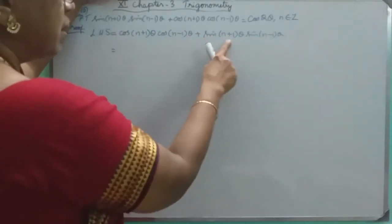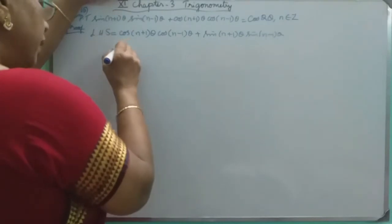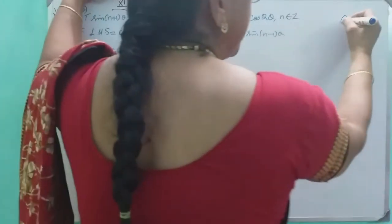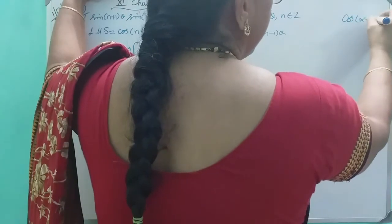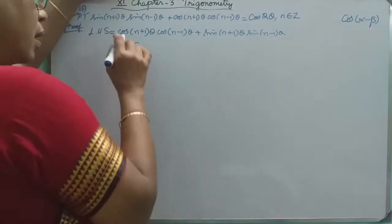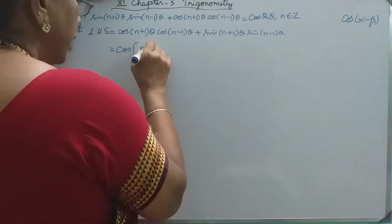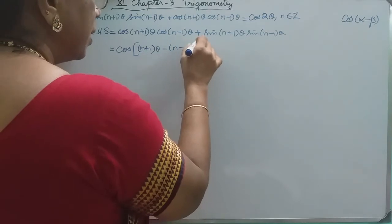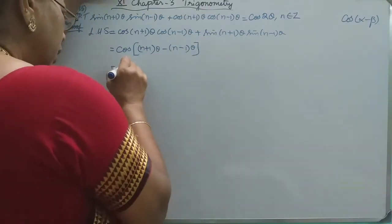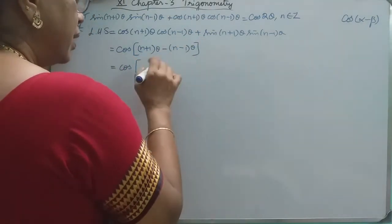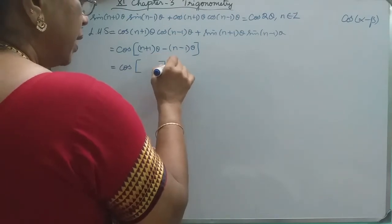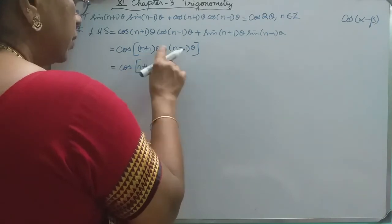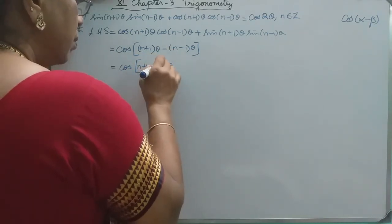We treat (n+1)θ and (n-1)θ separately. Applying the cos(α - β) identity — cos α cos β + sin α sin β = cos(α - β) — with α = (n+1)θ and β = (n-1)θ, this gives us cos of (n+1)θ minus (n-1)θ, which is nothing but cos of 2θ.